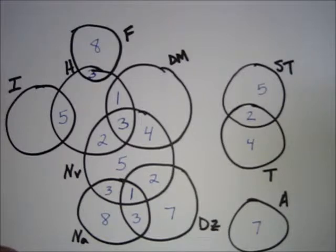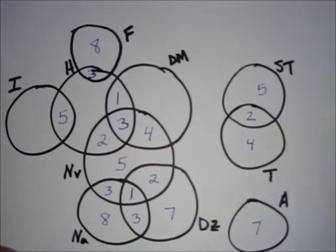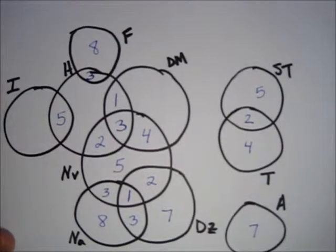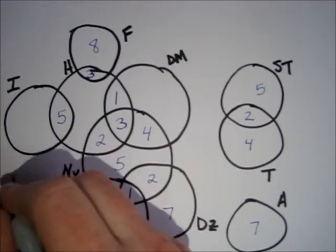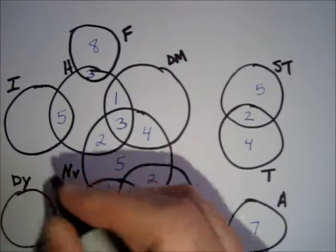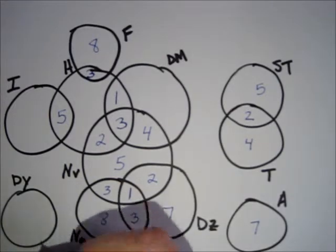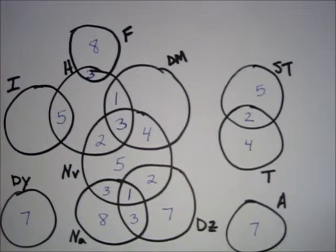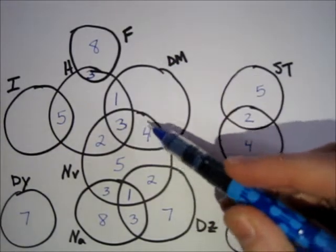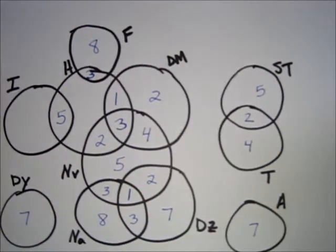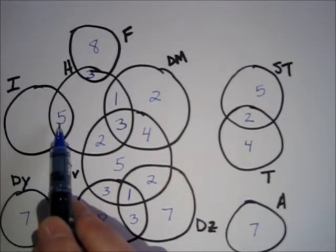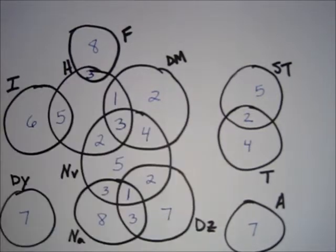Seven people experienced drowsiness. I haven't used drowsiness yet, so I need another circle all by itself — I'll put it in the corner. This is drowsiness. Ten people experienced dry mouth. Here's our dry mouth circle — we've used four, seven, eight — so two people go right here. And 11 people experienced insomnia. This is our insomnia circle — we've used five, so six goes there to make 11.